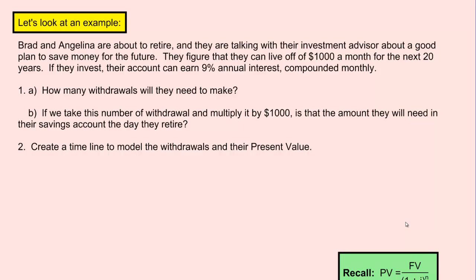So here's question number 1a: How many total withdrawals would they need to make? Let's figure this out right away. If they're going to live off $1000 a month for the next 20 years, that's 20 years times 12 times a year, so 20 times 12, which is 240 different withdrawals they'll need to make.